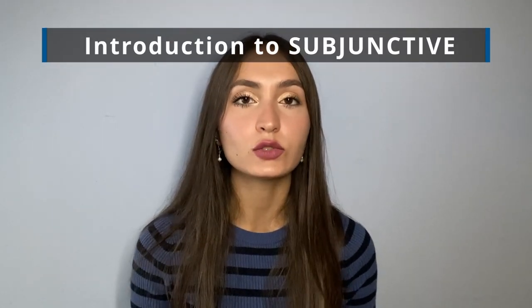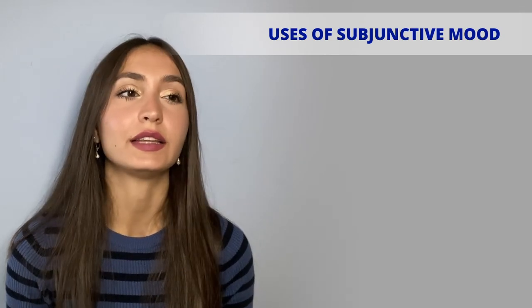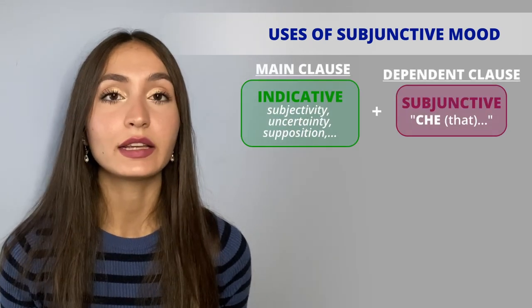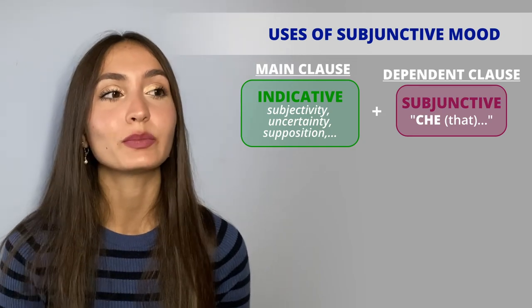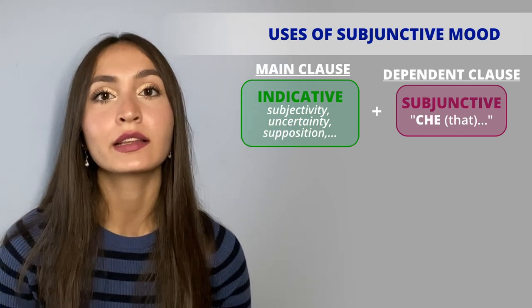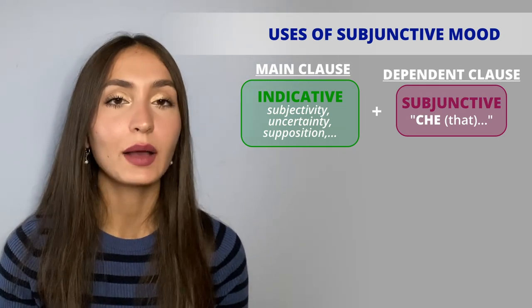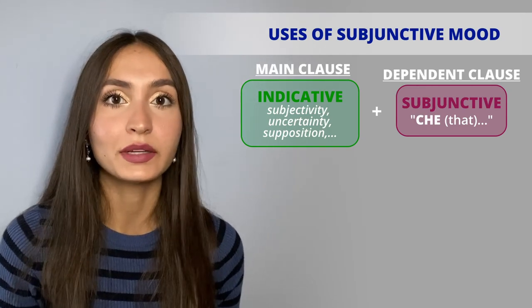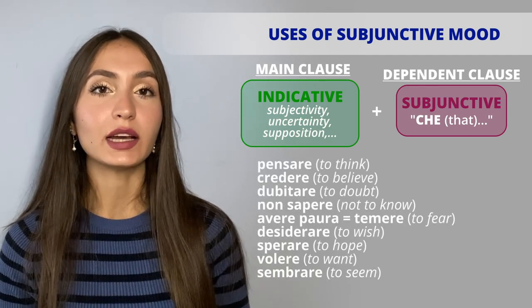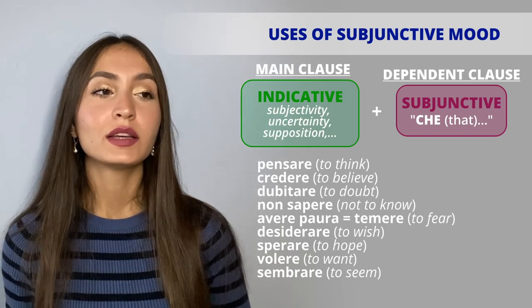In the Italian language, the subjunctive mood is much more common and used than in English. What you need to remember is that in Italian we use the subjunctive mood to express opinions, uncertainty, supposition, wishes, and doubts. The subjunctive is mainly used in dependent clauses introduced by 'che' (that), in general after an indicative verb in the main clause expressing subjectivity or uncertainty — meaning you don't know if the action has happened, is happening, or will happen. Verbs in the main clause can be: pensare, credere, dubitare, non sapere, avere paura, temere, desiderare.